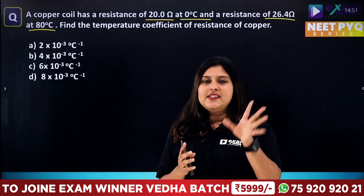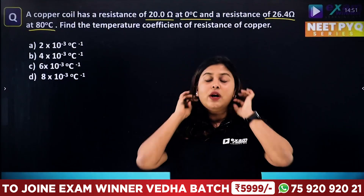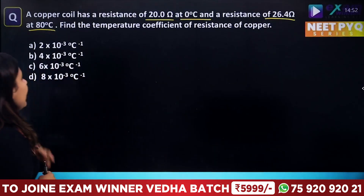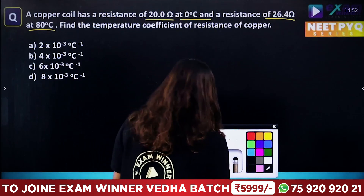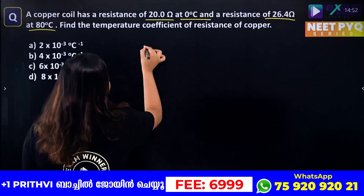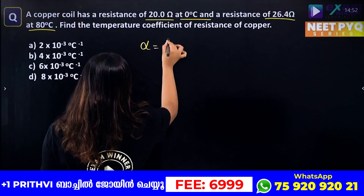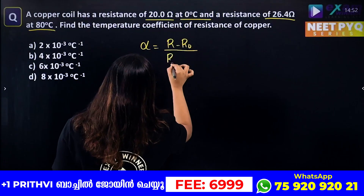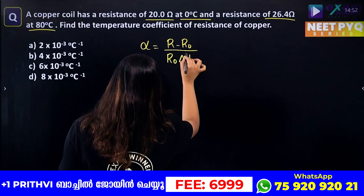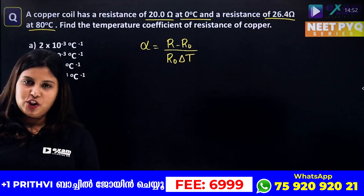Conductors, semiconductors — what does it mean? Resistivity and resistance. We are going to change the equation. We are going to learn the temperature coefficient of resistance. What is the norm? What is the temperature coefficient of resistivity? We are going to learn the equation: Alpha is equal to R minus R₀, divided by R₀ into delta T.